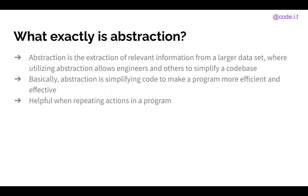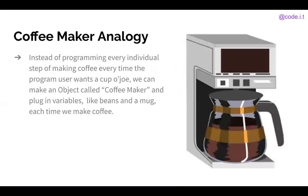It's really helpful when repeating actions in a program. Abstraction will allow you to simply call one action multiple times instead of a long, long list. So we're going to take a look at some examples. Abstraction is cutting down what you don't really need. So the coffee maker analogy is something that's really helpful when learning abstraction.